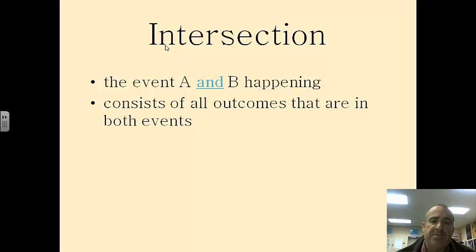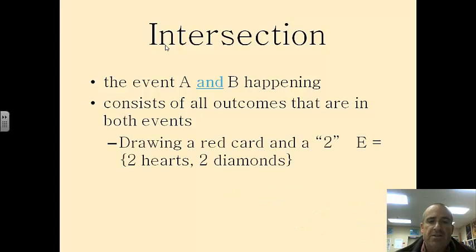The outcome has to be in both events. So for example, drawing a red card and a two. The event would be two of hearts and two of diamonds. Those are the cards that are both red and twos. And the way we write that is A with the upside down U, B. And that's an intersection symbol.